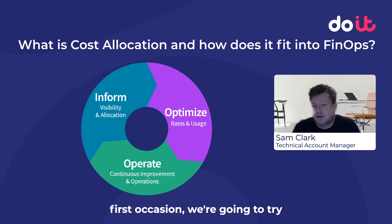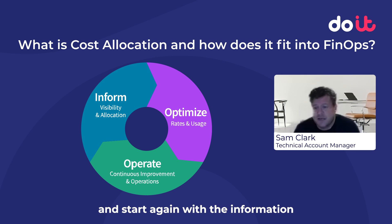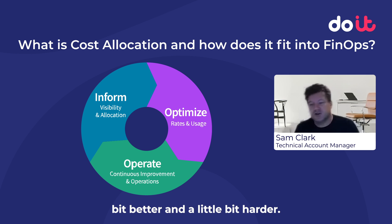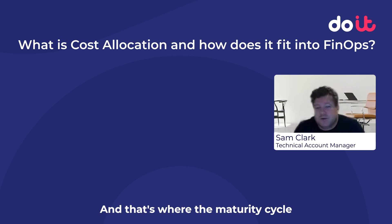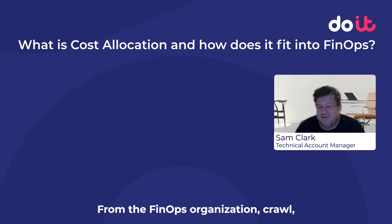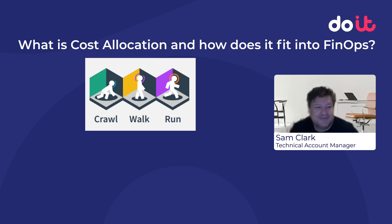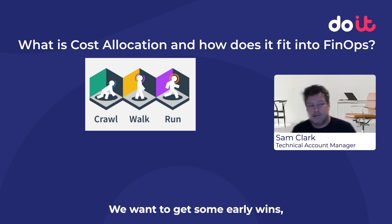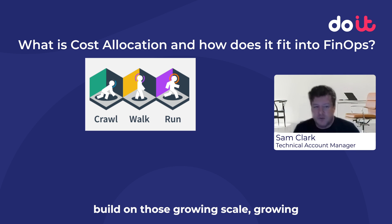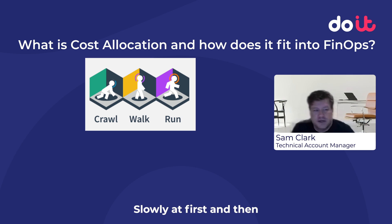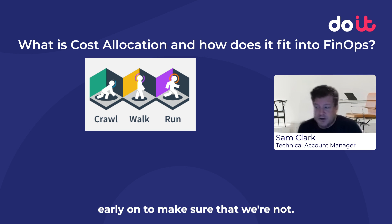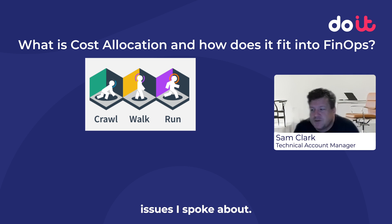Once we go through this cycle on the first occasion, we're going to start again with the information from that optimize and operate phase informing us on the next cycle. We're going to try to get a little bit better and a little bit harder. That's where the maturity levels come in from the FinOps organization: crawl, walk, and run. In the crawl phase, we really want to make sure that we're starting off small and growing — getting some early wins, building on those, growing in scale and complexity, and making changes slowly at first and then picking up speed, limiting scope to avoid causing production issues.